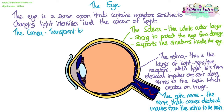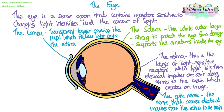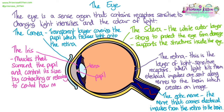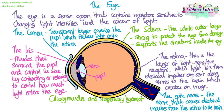The cornea is a transparent layer that covers the pupil. It helps to focus the light onto the retina because it's curved. Inside we have the lens, which is a sack of transparent fluid, and the pupil, which is the hole that light enters through into the eye. Around the pupil is the iris — these are the muscles that surround the pupil. The iris muscles control the size of the pupil by contracting or relaxing, which also controls how much light enters the eye.